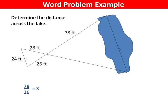The two parallel lines are corresponding, so to find the distance across the lake, we would multiply 24 by the scale factor to get 72 feet.